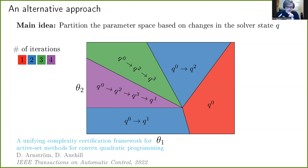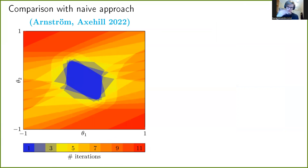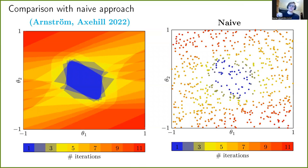We proposed this partitioning approach in a recent publication in Transactions on Automatic Control. I've skipped the technical details of how we perform this partitioning — I refer to the paper for those. The key benefit compared with the naive method is full coverage of the parameter space: we know exactly, for all possible problems, the worst-case number of iterations. With the naive approach, maybe you capture the worst case, but you can never be sure — I wouldn't trust it to capture all possible cases.